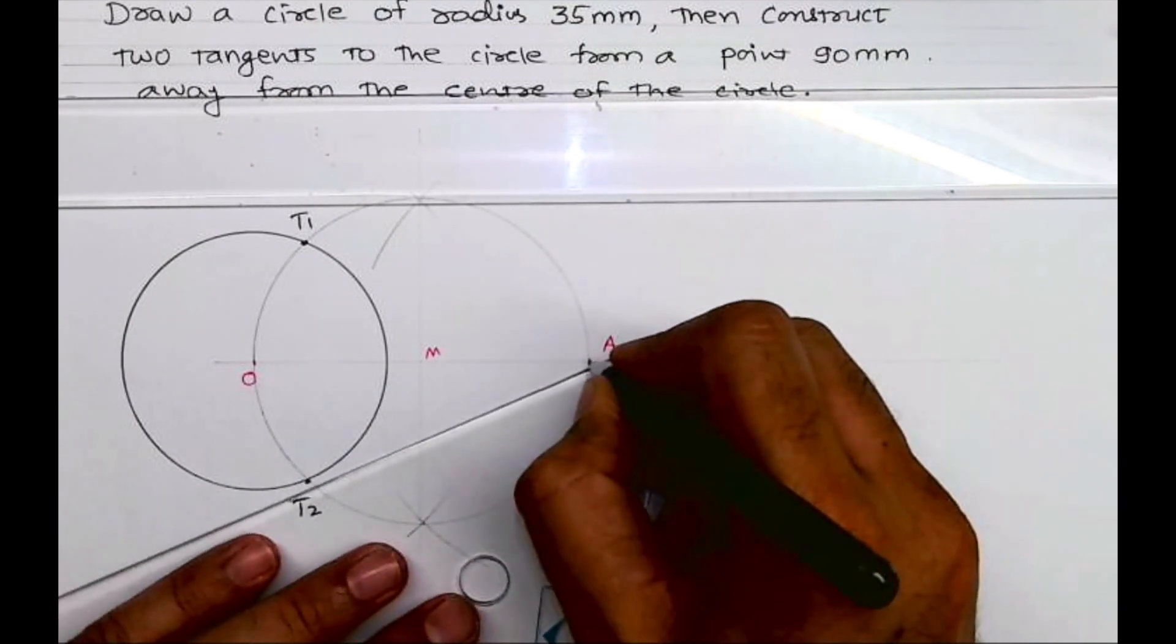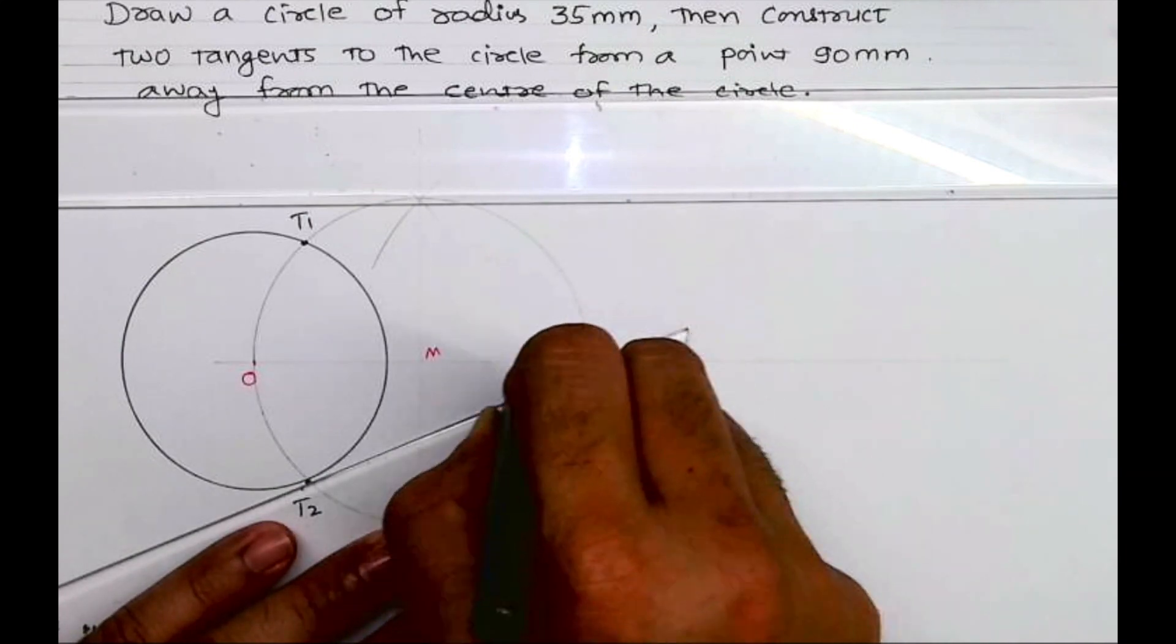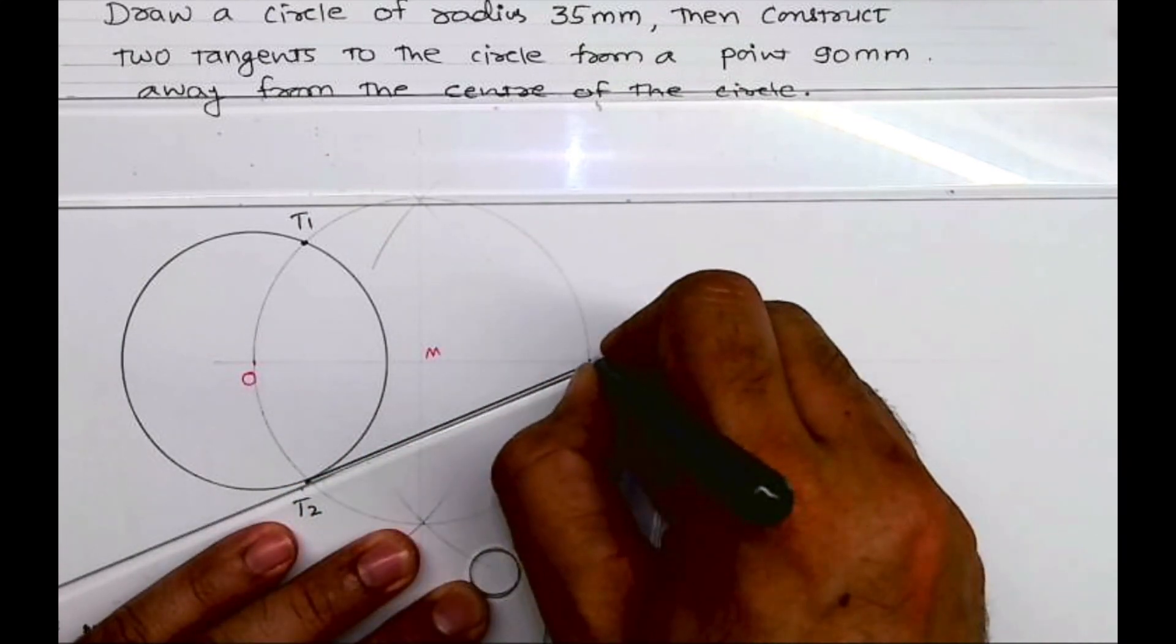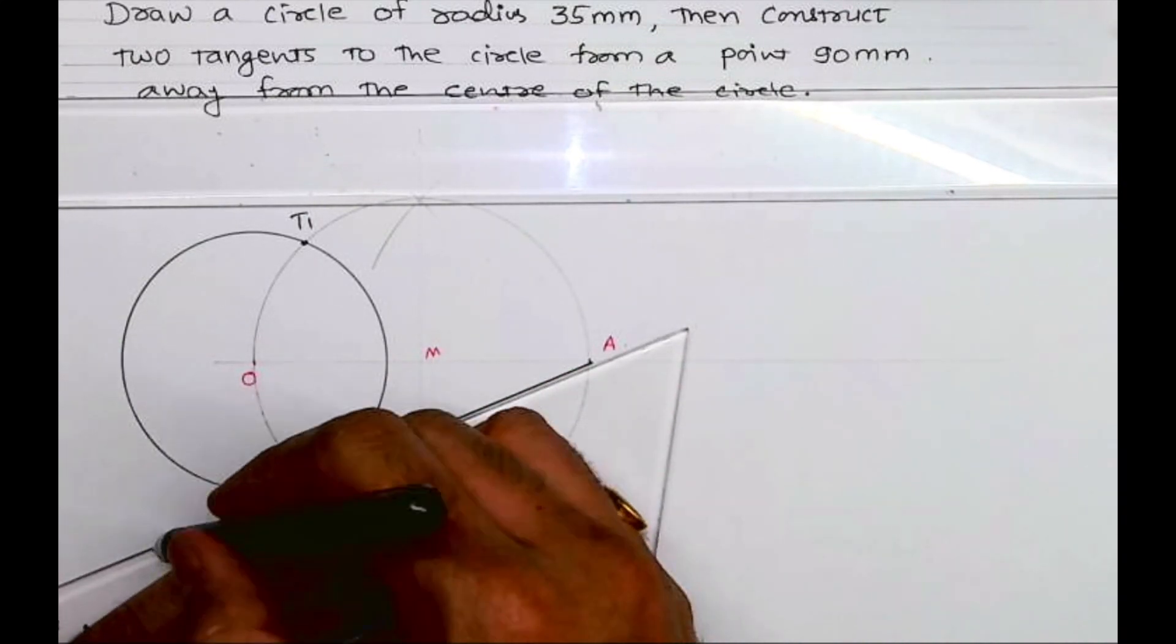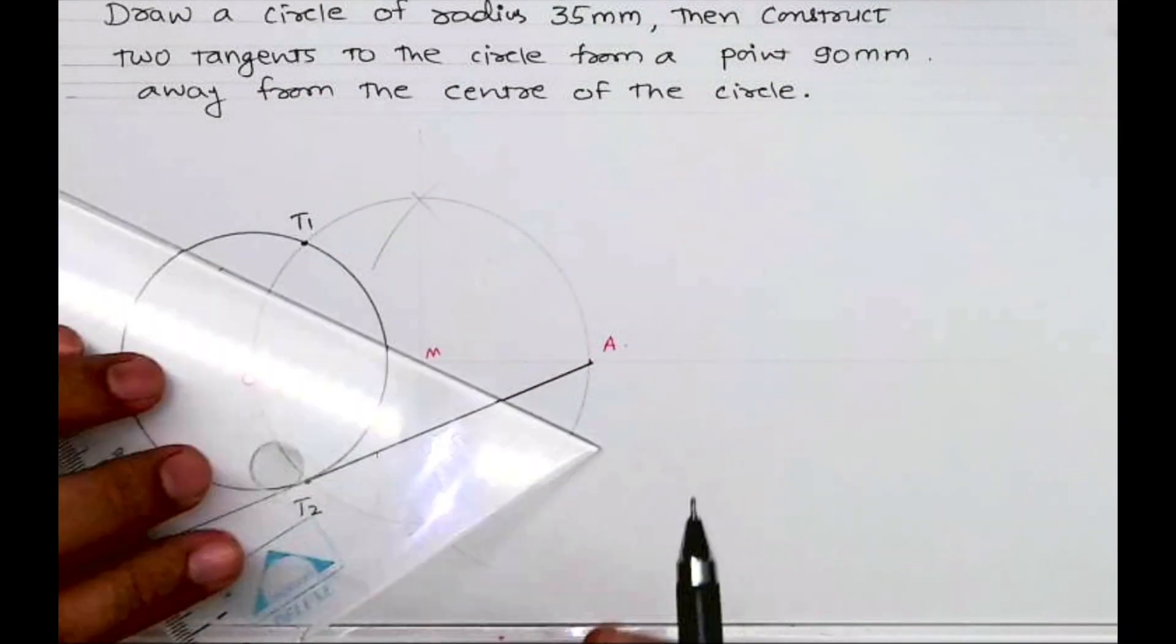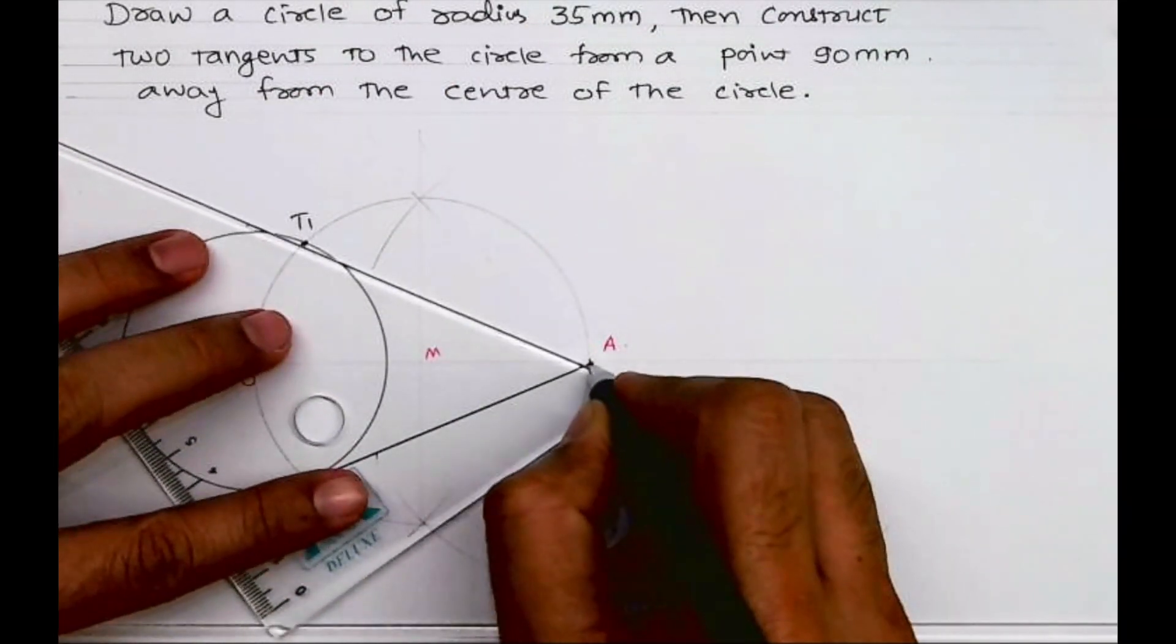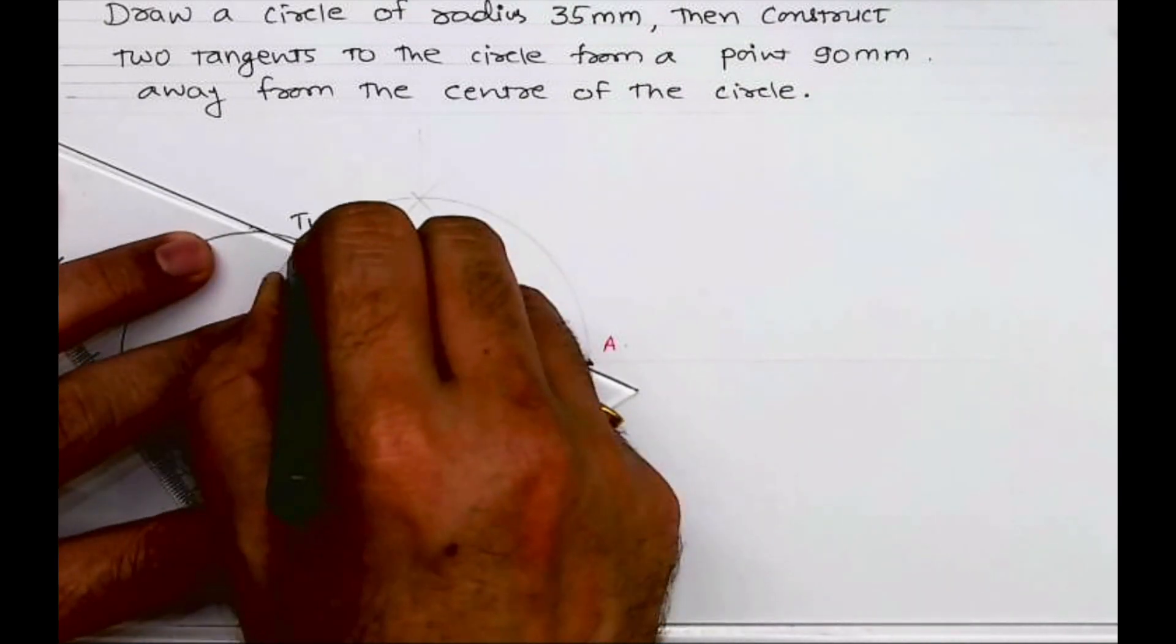This way we got tangent A to T2 and A to T1. Then what we need to do is mark T1A and T2A and write it down.